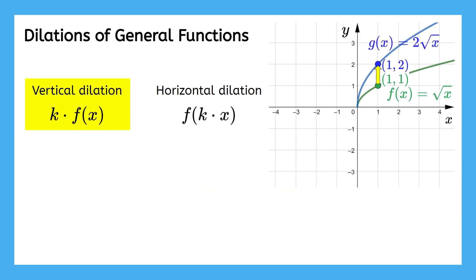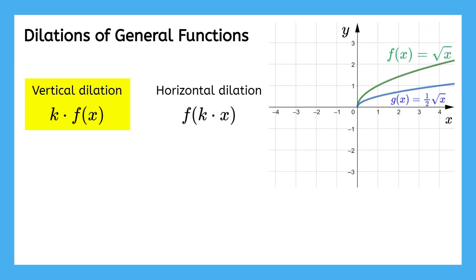So this vertical dilation by two takes each point on the function and brings it twice as high. Similarly, a vertical dilation by one half brings the graph down to half its original height. The point four comma two, for example, moves down to four comma one, because we're taking each number that comes out of the square root and cutting it in half.